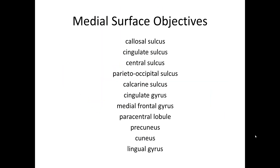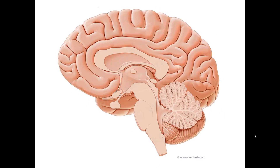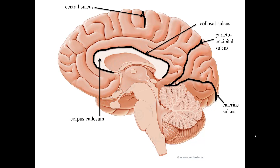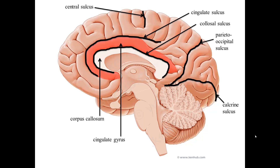Next, we will look at the medial surface. Remember from lab 1 that we can see the central sulcus and parietal occipital sulcus on the medial surface of the cerebrum. We also discussed the calcarine sulcus and corpus callosum in that lab. Just superior to the corpus callosum is the callosal sulcus. The next sulcus, superiorly, is the cingulate sulcus. Between these two sulci is the cingulate gyrus.